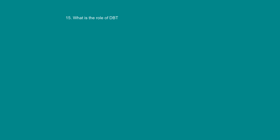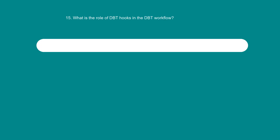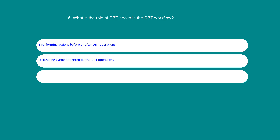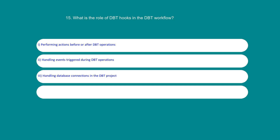What is the role of dbt hooks in the dbt workflow? Option 1: Performing actions before or after dbt operations. Option 2: Handling events triggered during dbt operations. Option 3: Handling database connections in the dbt project. Option 4: Executing custom SQL queries in the dbt project. The answer is 1: Performing actions before or after dbt operations.